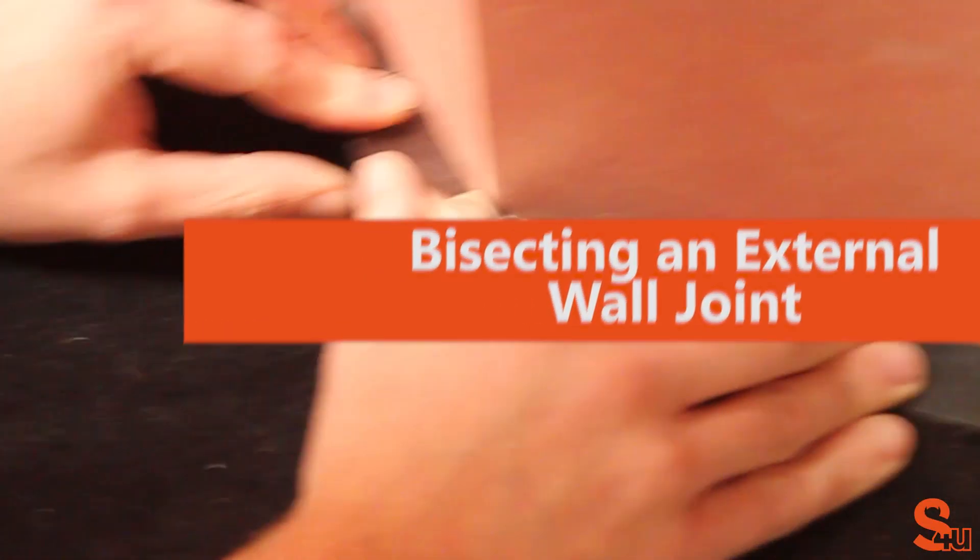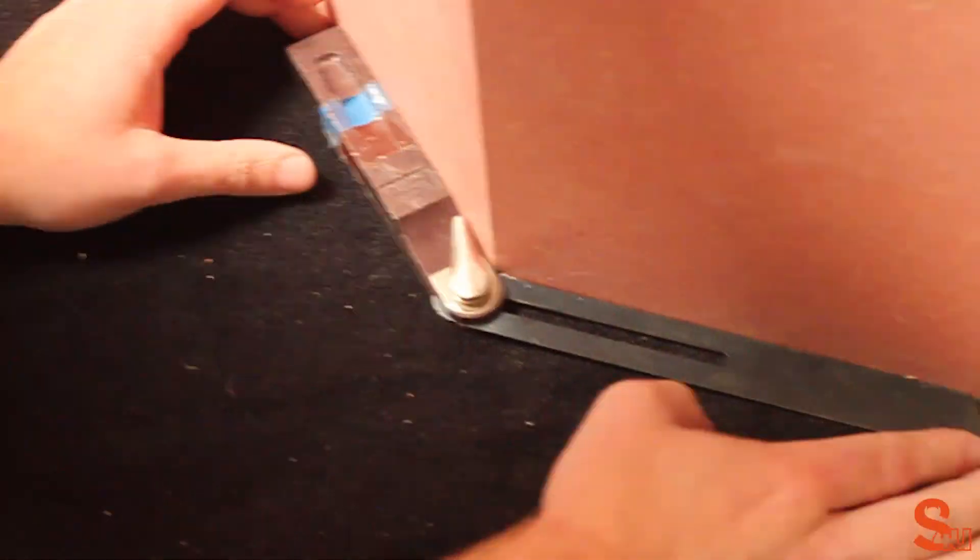Bisecting an external wall join. Using a sliding bevel, find the required angle.